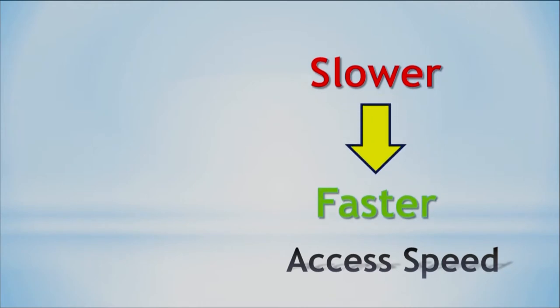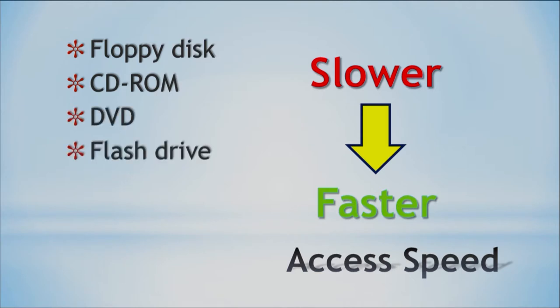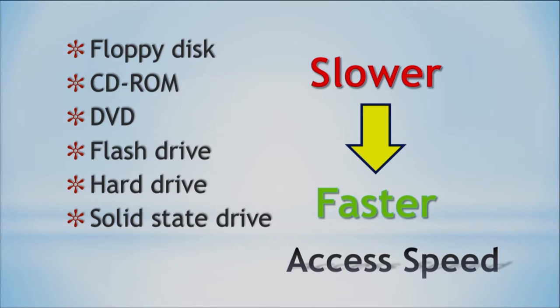So how about access speed — how fast can we access secondary storage? Going from slower to faster: floppy disk is way slower; when it first came out it was magnificent, but nowadays it's super slow. Then CD-ROM, not as slow. Then DVD, slightly faster. Then the flash drive, which is good. Then the hard drive. And last but not least, the solid state drive. The price goes kind of hand in hand with speed — if it's more expensive, it's probably going to have faster access. So you have to think: how fast do I need that information? A couple of seconds 100 times in a day adds up.